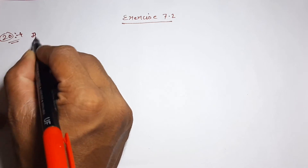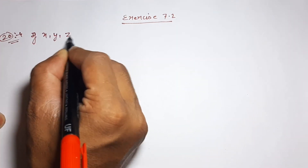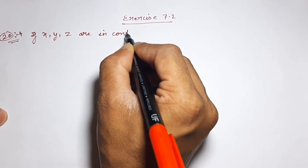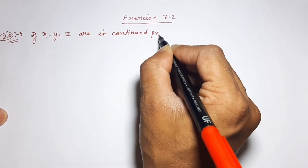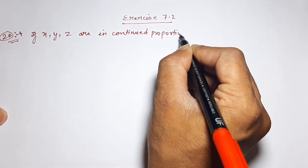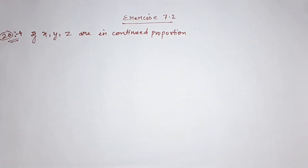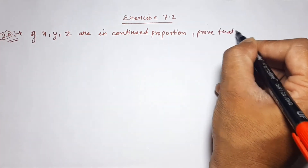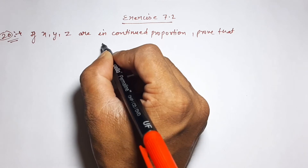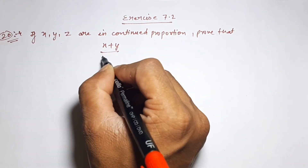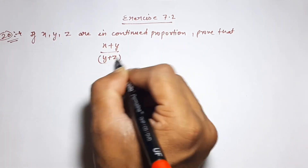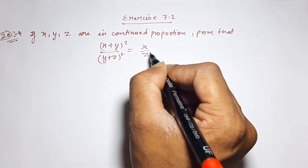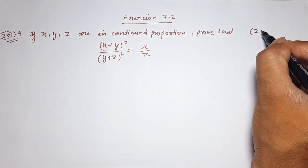Question number 20: If x, y, and z are in continued proportion, then prove that x plus y upon y plus z, whole square, is equal to x by z.